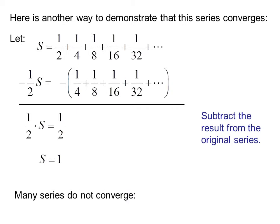Many series do not converge. For example, this series, which looks somewhat similar to the previous series, does not converge. Rather, the partial sums keep increasing and it approaches a value of infinity.